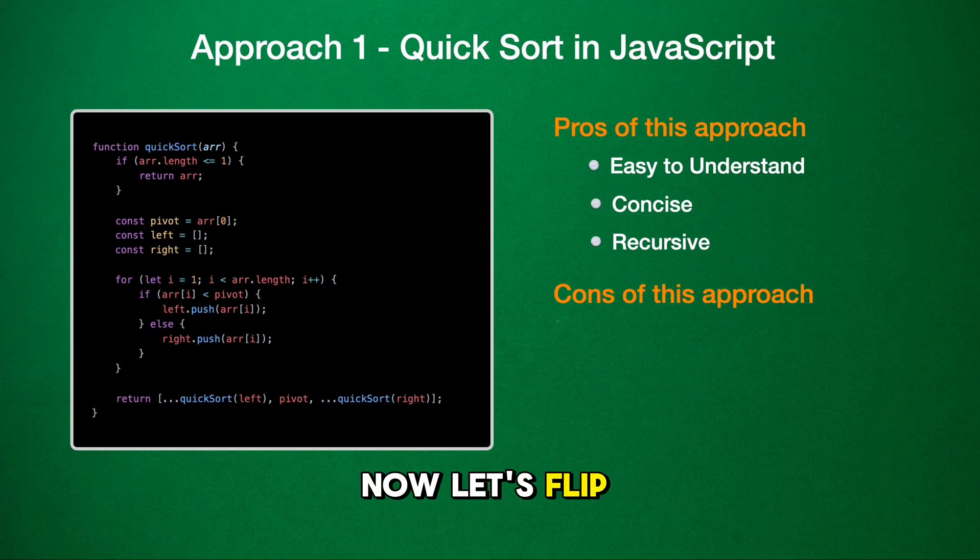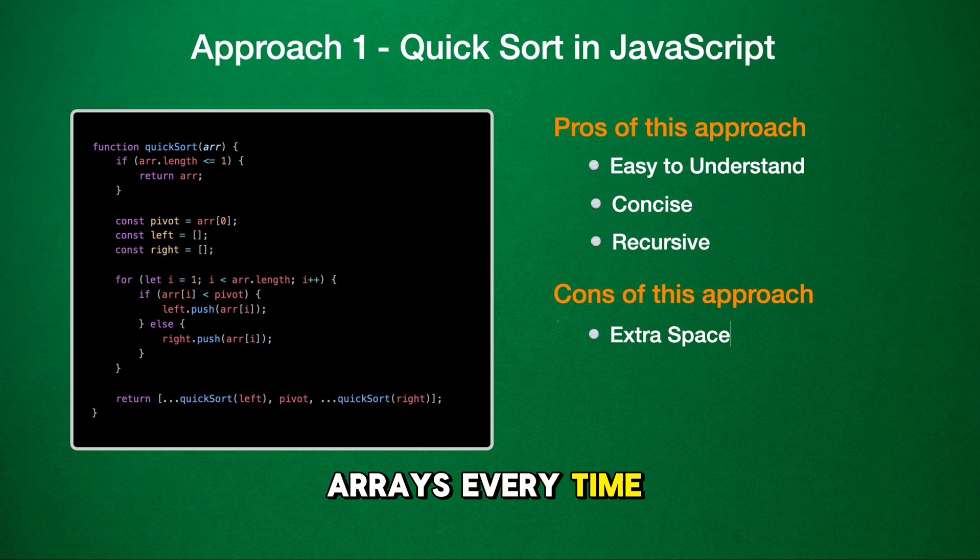Now, let's flip the coin and look at the cons. Con number one, extra space. This approach is a bit of a hoarder. It creates new arrays every time it divides the list, which can really pile up.